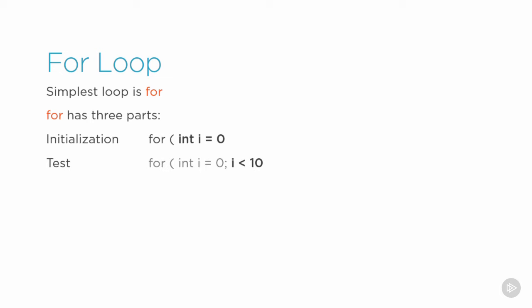Before the loop is run, the test is checked. If i is less than 10 in this example, then the body of the for loop will be run. Afterwards, the final part, the increment, will be run.